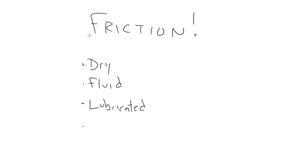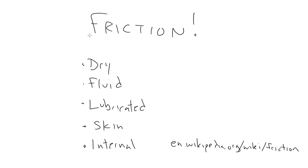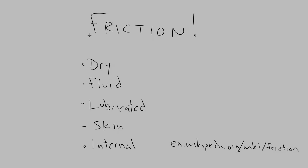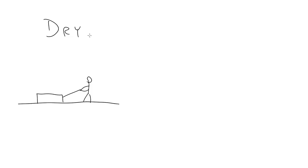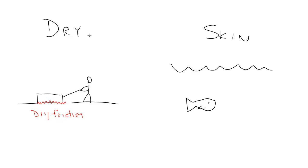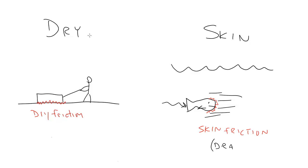Dry friction, fluid friction, lubricated friction, skin friction, and internal friction. No, I'm not making these up. You can look all of these up to learn more about them, but in this video we're mainly talking about dry friction, which is when two surfaces are in contact, and skin friction, which is the friction that occurs when an object moves through a liquid or some other medium like the atmosphere. Skin friction is also part of what we call drag.